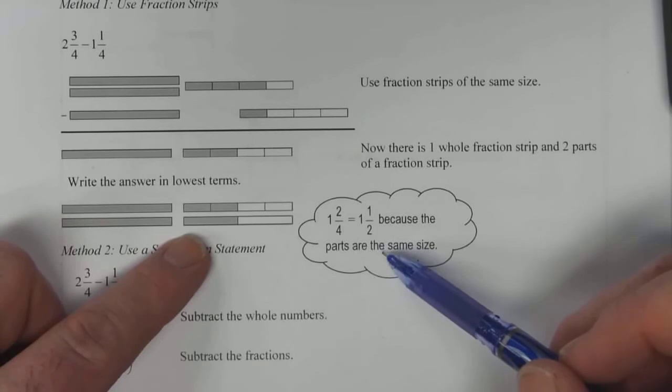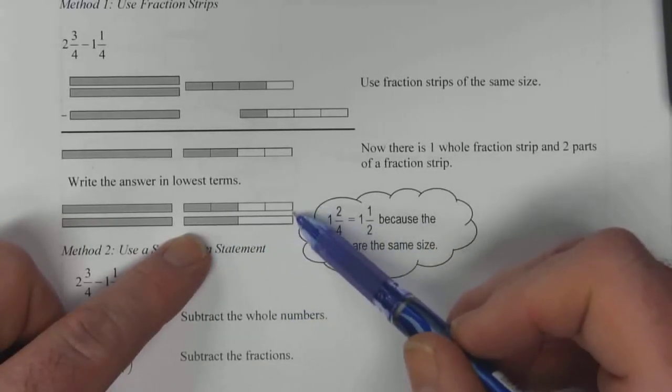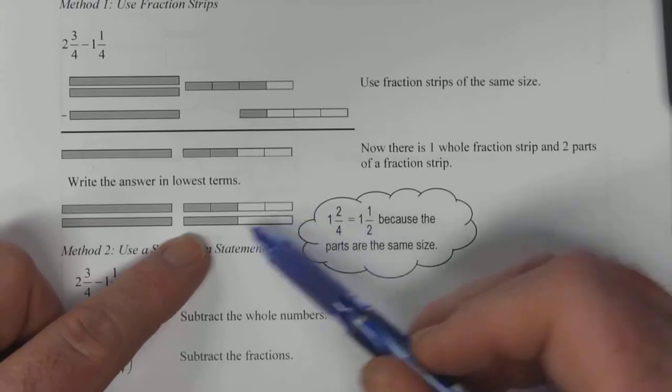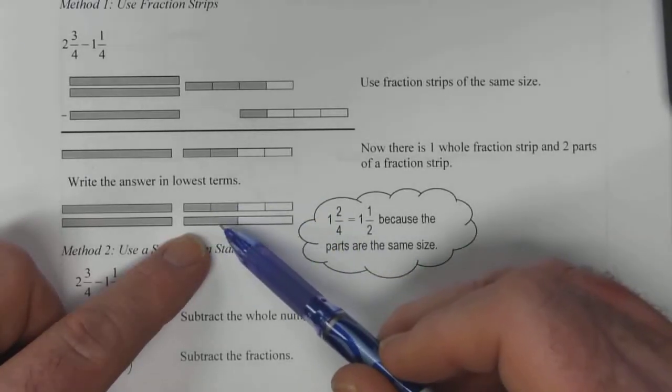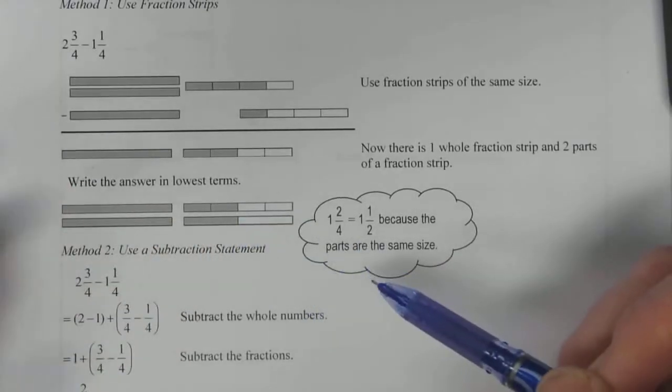And that's why we use fraction strips that are the same size. If these were two different lengths we wouldn't be able to compare them properly. But right now we can see that half of this strip is shaded. So we can convert it to one half instead of two fourths.